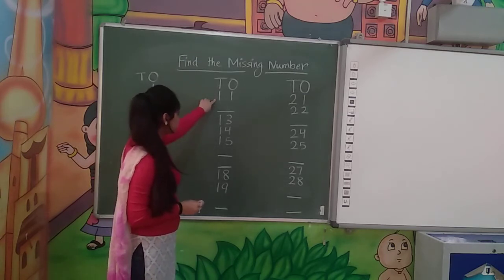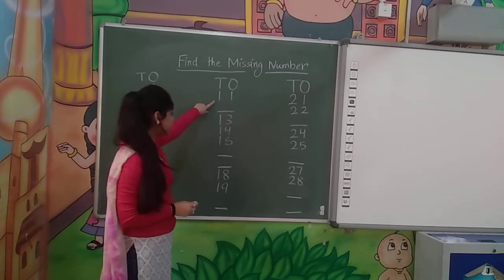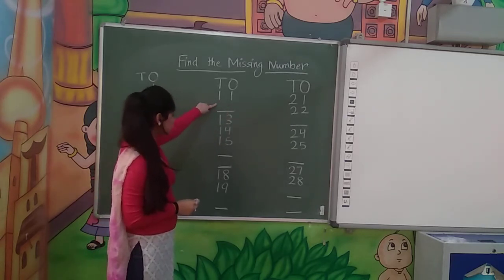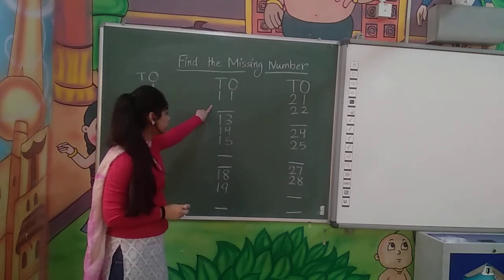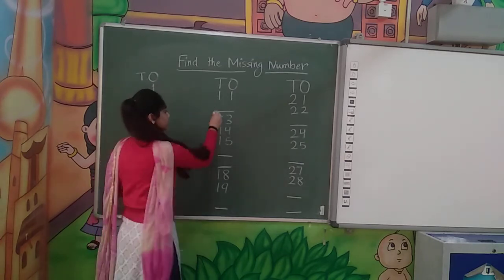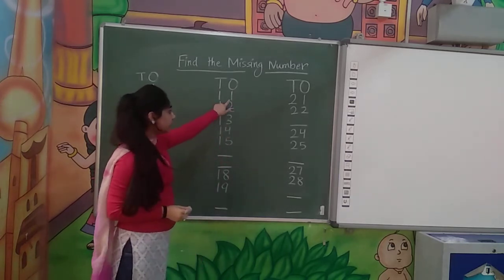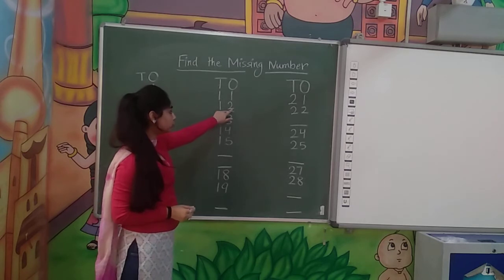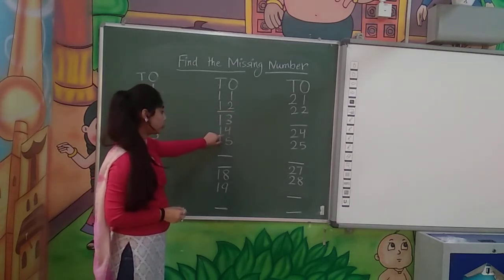What will be the next number? 11. 12. So after 11, which number will come? 12. So what will be here? 12. So we will write it out. 12. 11, 12, 13, 14, 15, 16.